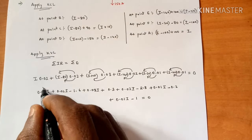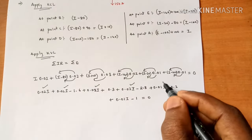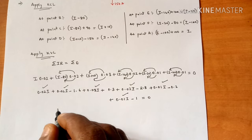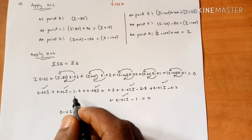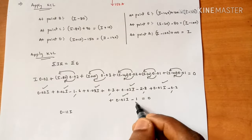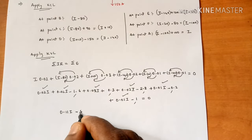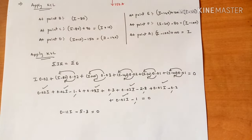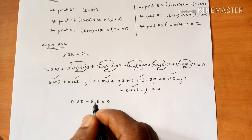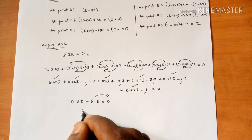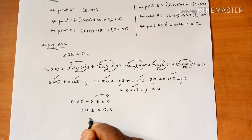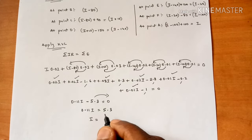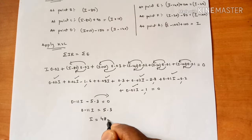Adding all the terms together and combining the numerical constants, we get a coefficient of I and a numerical result. After simplification, collecting all I terms and numerical terms gives us I times a coefficient minus 5.3 equals 0. Solving, we get I equal to 48.18 amps.